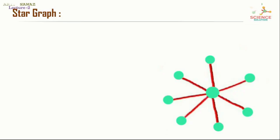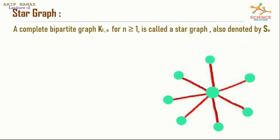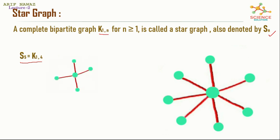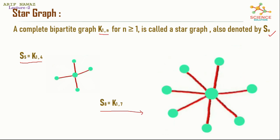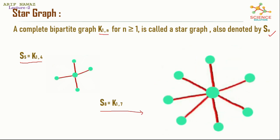Star graph: a complete bipartite graph K_{1,N} for N greater than or equal to 1 is called a star graph, denoted by S_N where N is the number of vertices. For example, S_5 equals the complete bipartite graph K_{1,4}, and S_8 is the star graph of 8 vertices equal to K_{1,7}. The diagram of S_8 shows that 7 non-adjacent vertices are each adjacent with 1 central vertex.